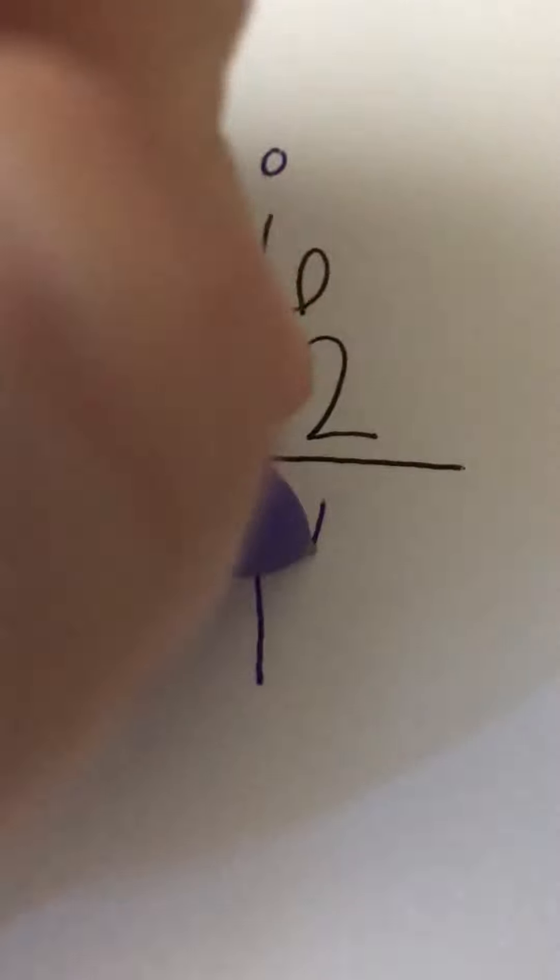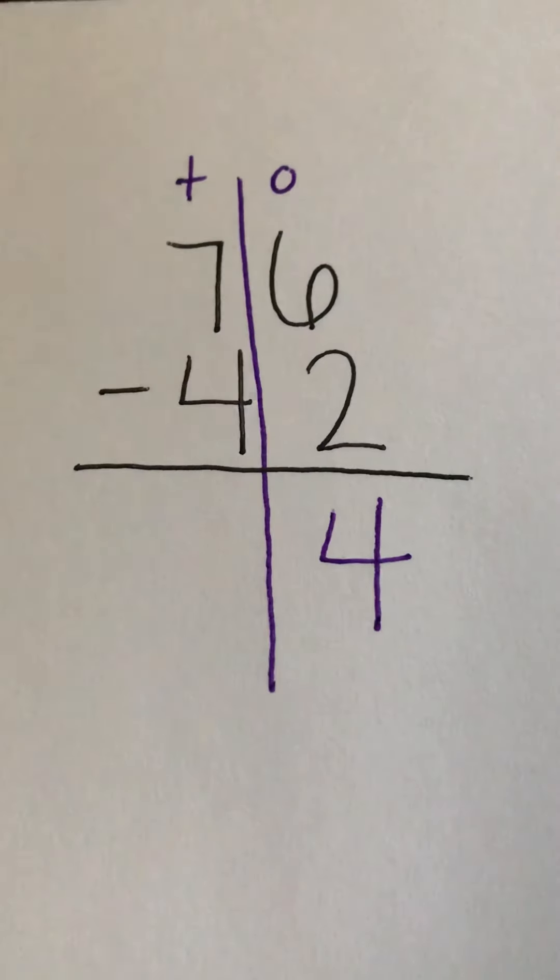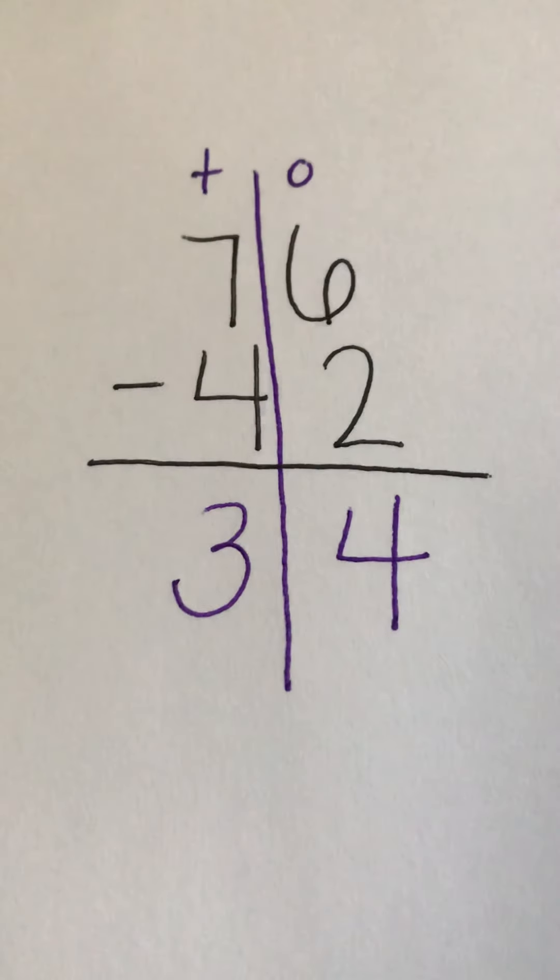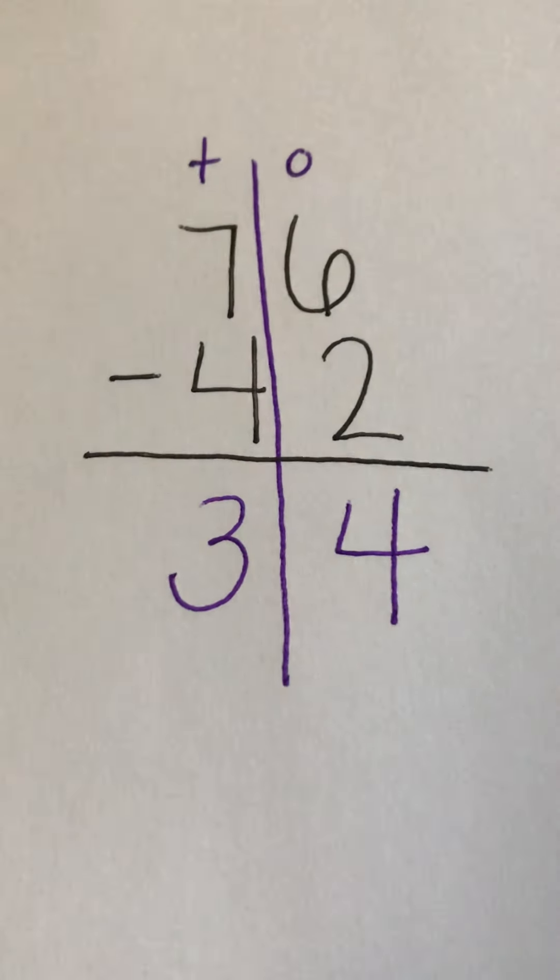So six minus two equals four and seven minus four equals three. So 76 minus 42 equals 34.